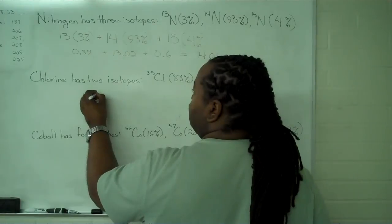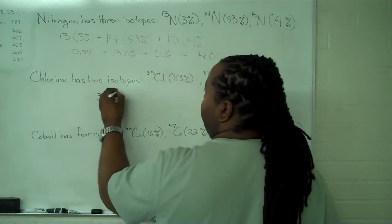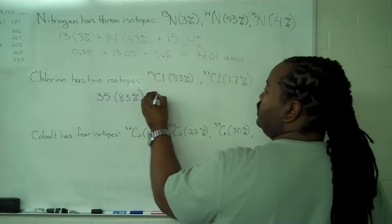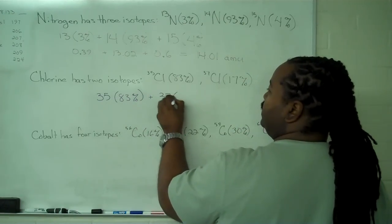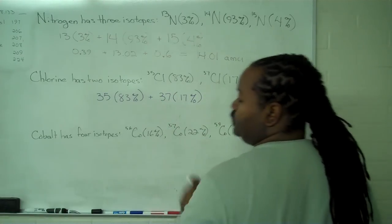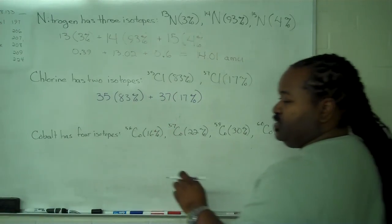We have 35 times the abundance, which is 83%, plus 37 times the relative abundance of 17%. So we'll multiply each of these.